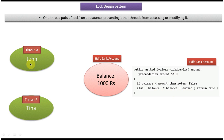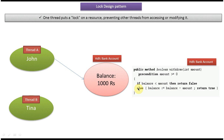Assume John is thread A and Tina is another thread, thread B. John tries to withdraw 1000 rupees from the HDFC bank account, so thread A enters this method passing 1000 rupees. It checks: amount greater than 0 — yes. Then it checks: amount less than balance — but the amount is equal to balance, not less. So this condition is passed and thread A comes to that position, then goes to sleep mode.